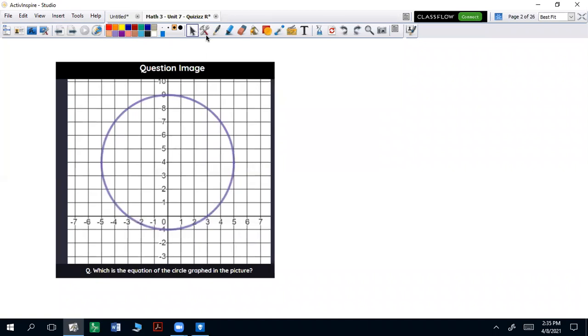Let's first go over question 1. We want to find the equation of the circle from the picture graph. First, let's identify the center. Our center right here is going to be (0,4).